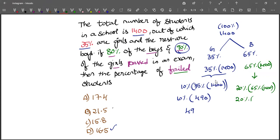65% of 1400 is 910. So 20% of 910. 10% is 91, so 20% is 182.